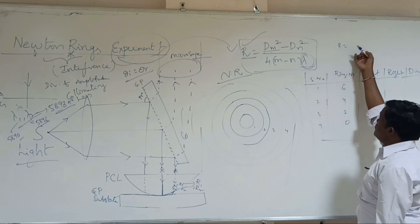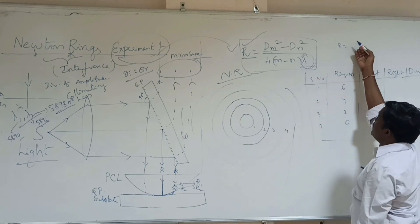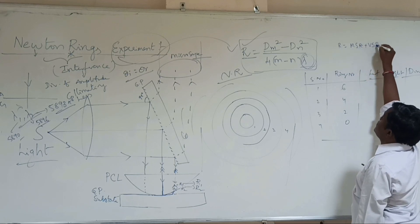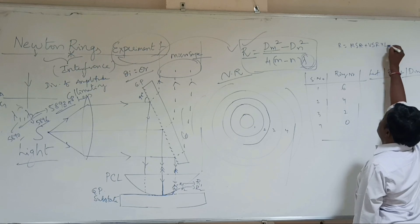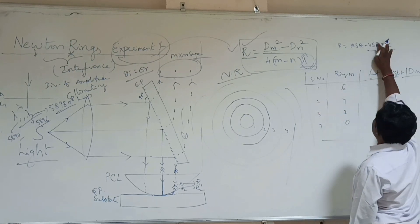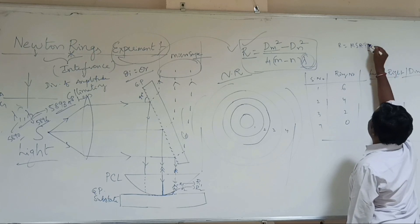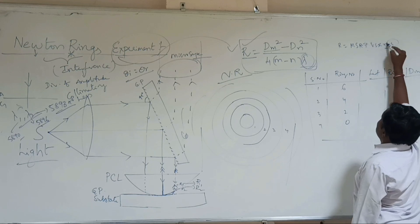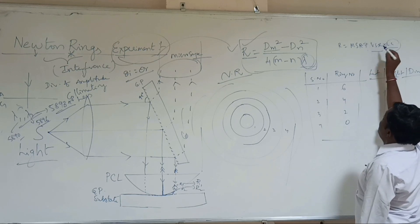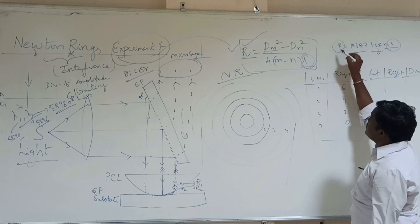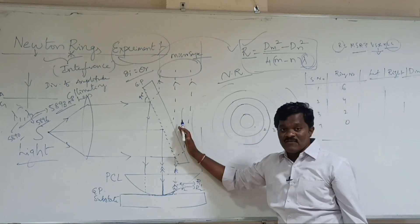The reading formula is basically MSR plus VSR into LC — that is, main scale reading plus vernier scale division into least count. You need to find the least count, identify whichever is the vernier scale division, and then get the main scale reading. The total reading you get at the 6th ring.